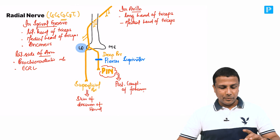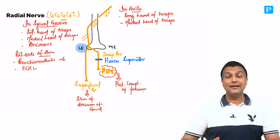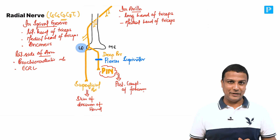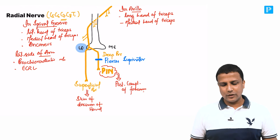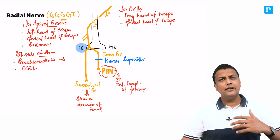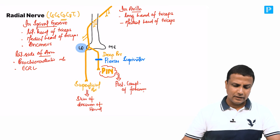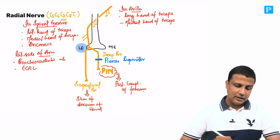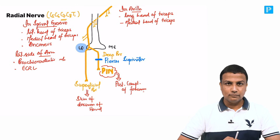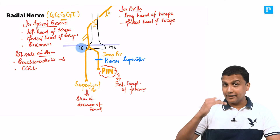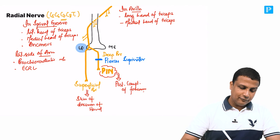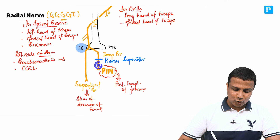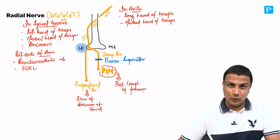I want you to remember the entire course of the radial nerve clearly, because once you do, it will be easy to correlate with orthopedics and the injuries of the radial nerve. We are going to divide radial nerve injuries into two categories: higher lesions — injury in the axilla or the spiral groove — and lower lesions — injury near the lateral epicondyle or injury to the PIN.